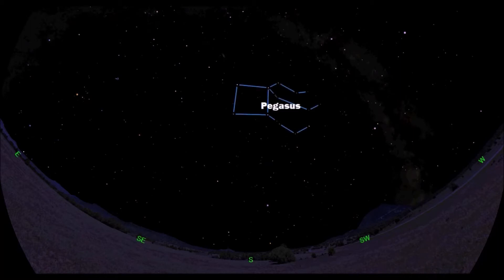Pegasus dominates the center of the sky and it's in a very easy shape to find, and that is a square. So if we take a look without the lines, you're just looking for these four stars right there to form a very large square.